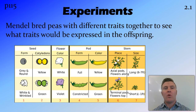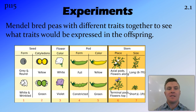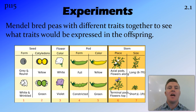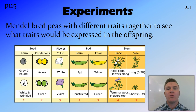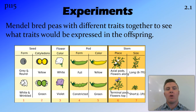What Mendel did in his experiments is he took peas with different traits — there were seven different traits that he did his testing on — and he crossbred those peas to see what traits would be expressed in the offspring.